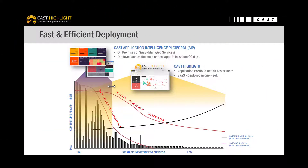CAST provides two complementary solutions. First, CAST Highlight acts as an X-ray to provide a rapid health assessment of your applications, regardless of their technology and their size. In a matter of days, decision makers can get the necessary insights to understand, segment, and prioritize their application portfolio. This continuous assessment may highlight findings in specific situations where critical applications must be fixed or modernized, and that's where we transition to AIP.